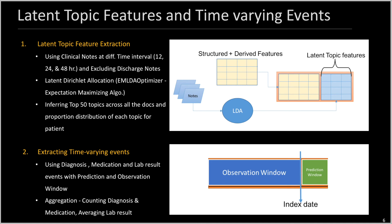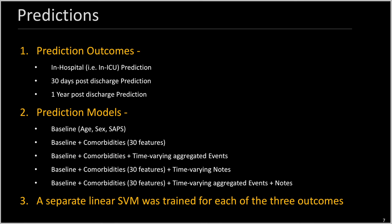The time-varying events, which were introduced in this project but not part of Ghassemi's work, were extracted from lab, diagnosis, and medication or prescription data using a prediction window of 30 days and an observation window of 2,000 days. The prediction outcomes set for this project are in-hospital, 30-day, and one-year post-discharge. I combined baseline features along with time-varying events and latent topic features from clinical notes, and trained a separate linear SVM for each of these three outcomes.